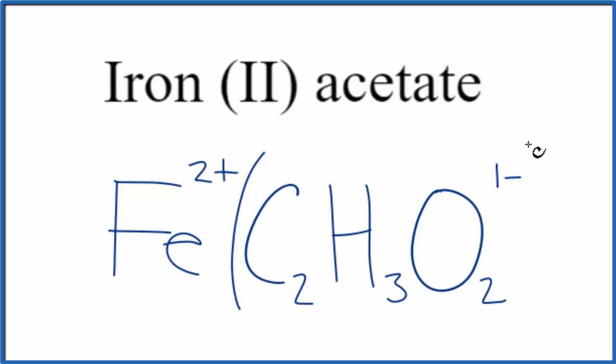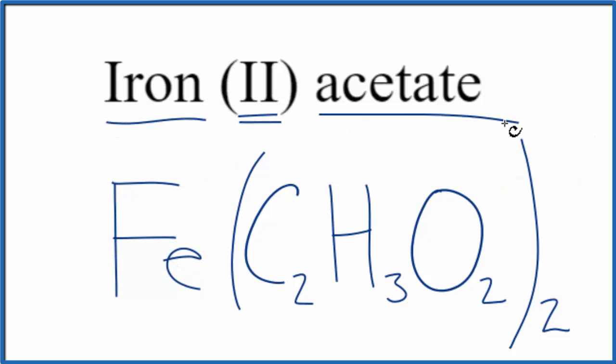So let's put this in parentheses here, put a 2 outside, and this is the formula for iron 2 acetate. This is Dr. B with the formula for iron 2 acetate.